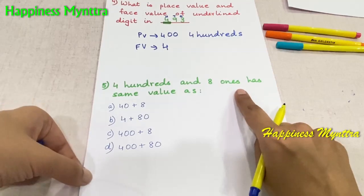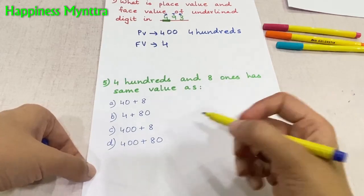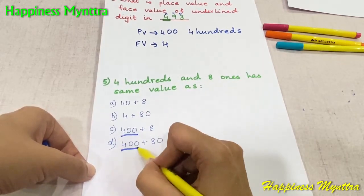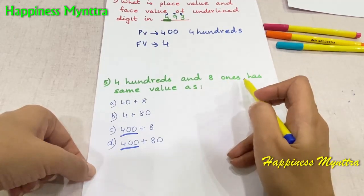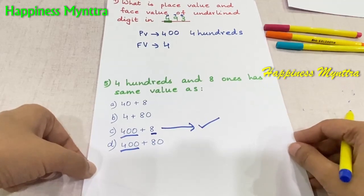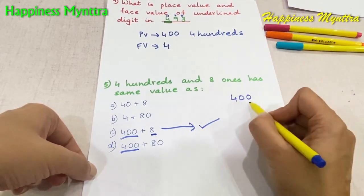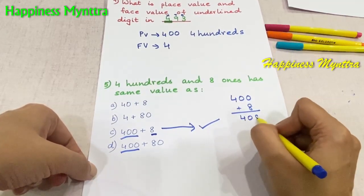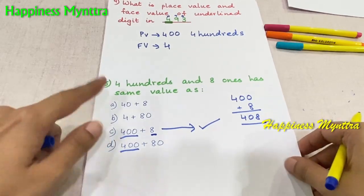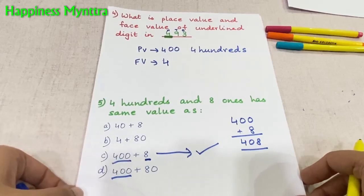Question 5: four hundreds and eight ones has the same value as which of these numbers? Simply check — four hundreds gives one set of options, and eight ones gives another. So obviously the correct answer is 408. Alternatively, children can add four hundred and eight ones to reach the answer and then verify through addition. Both ways are completely okay, but checking directly saves a little time.